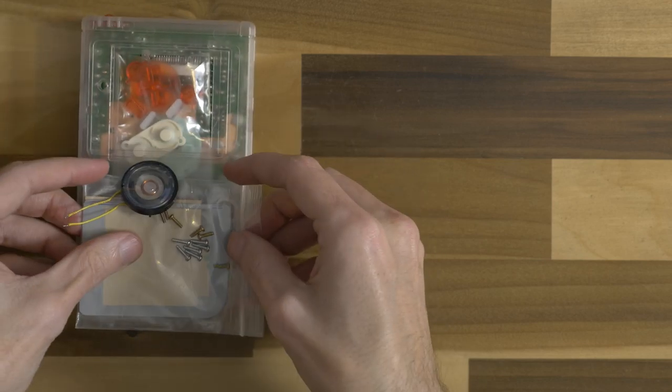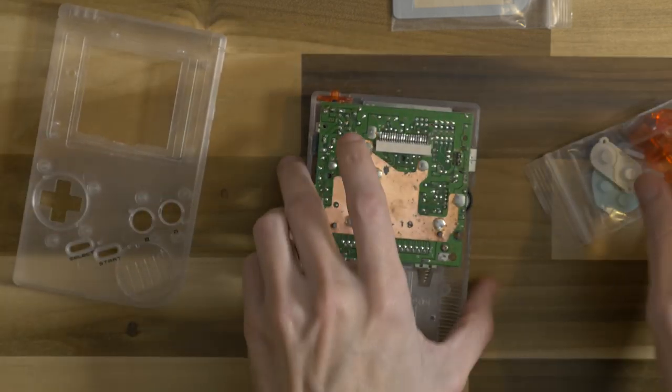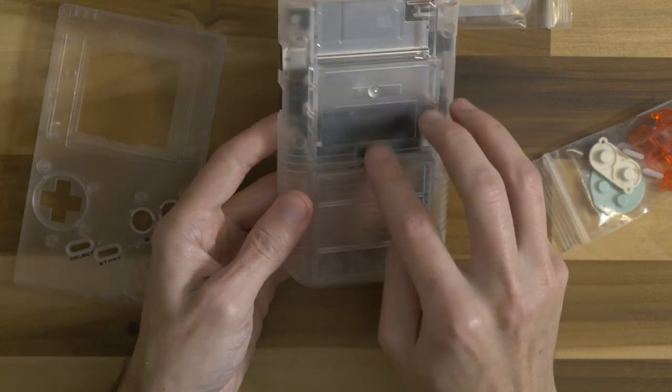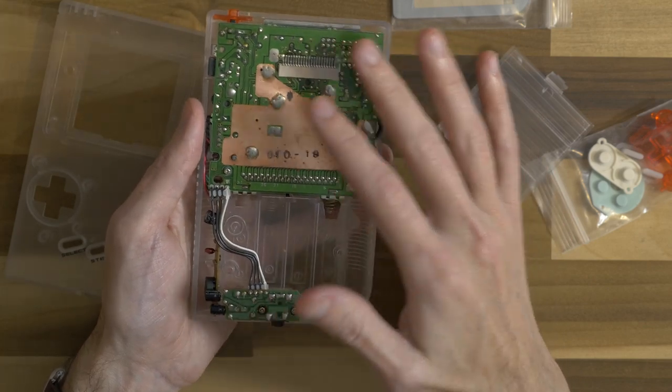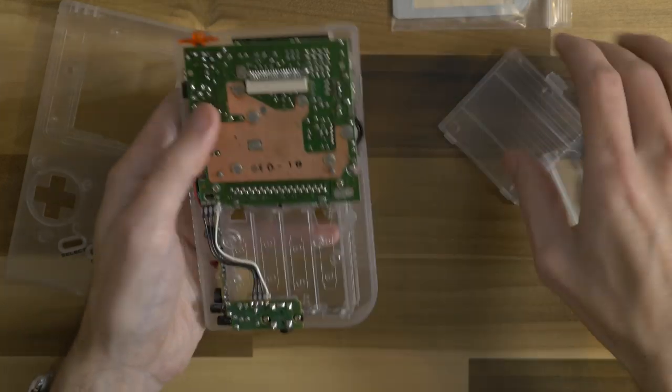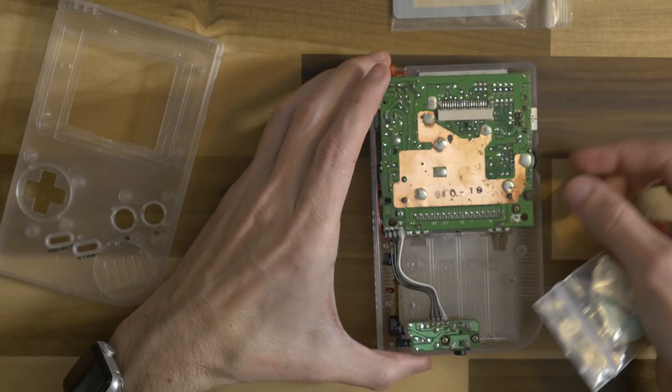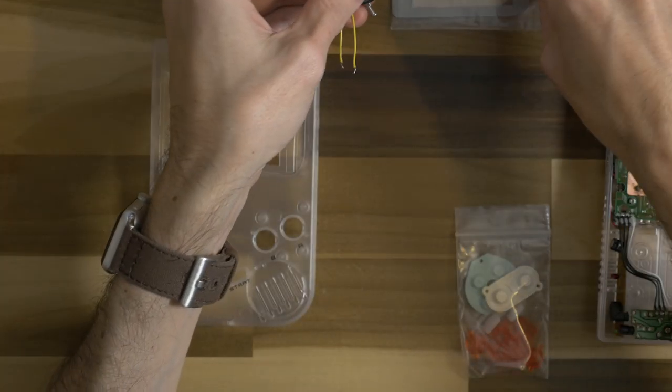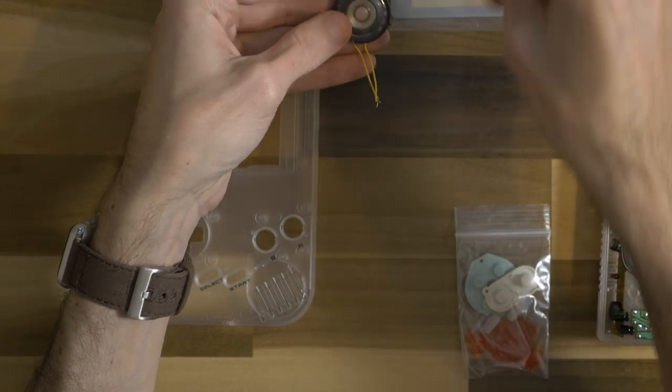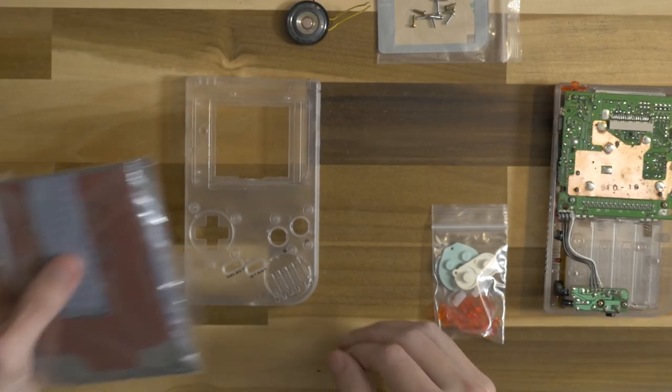Anyway, let's go ahead and get started. We're going to be installing the kit in this clear shell here. So here's the shell we're going to be using. I put the daughter board already in here, and so that's pretty much ready to go. You don't have to install a bivert chip or anything. You do need to solder in your own speaker.